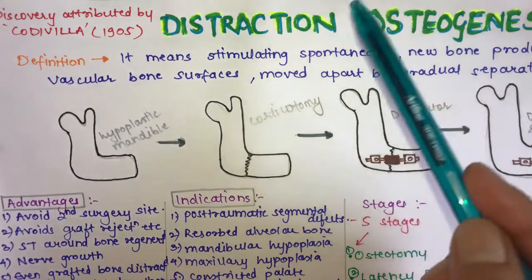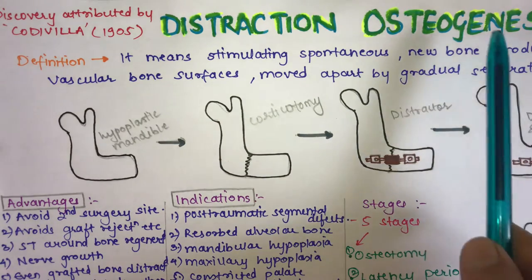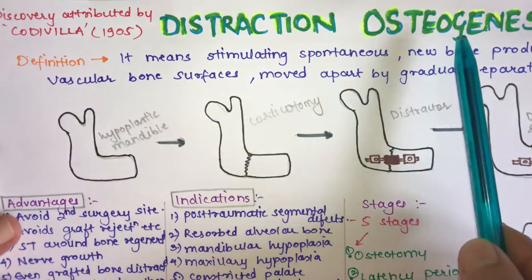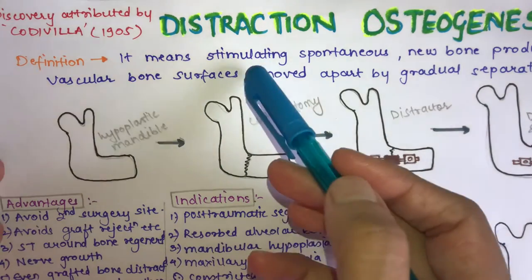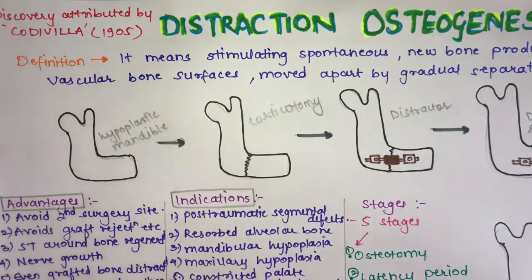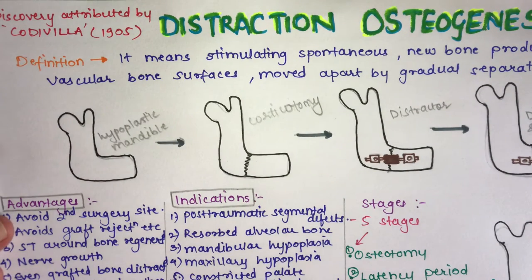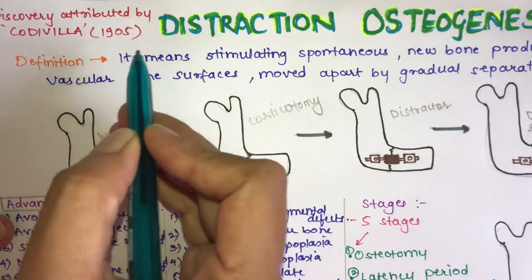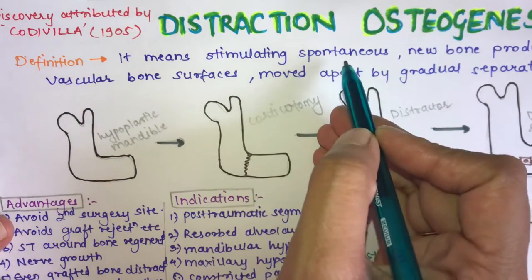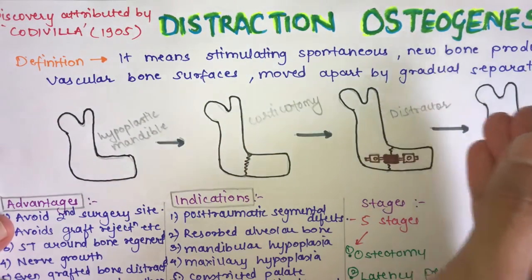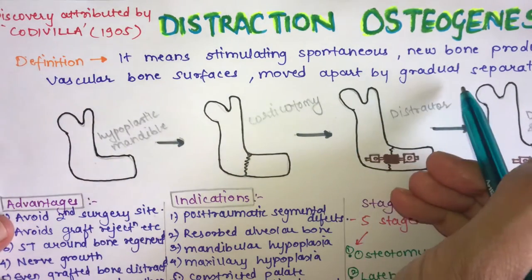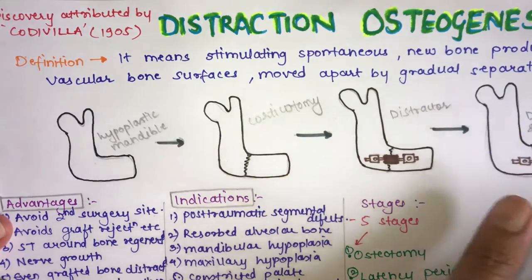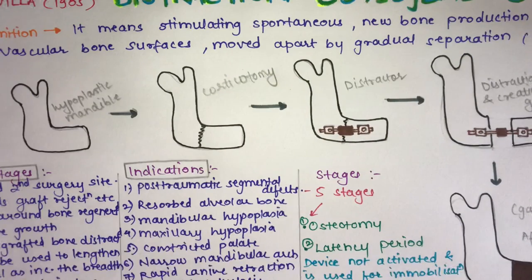As the name suggests, osteogenesis means formation of bone ('genesis' = formation, 'osteo' = bone), and distraction means moving something apart. By moving bone segments apart, new bone is formed. The definition of distraction osteogenesis is: stimulating spontaneous new bone production between vascular bone surfaces which are moved apart by gradual separation — where separation is distraction.